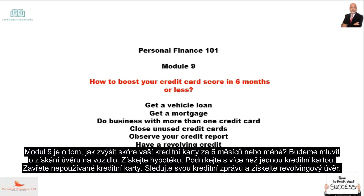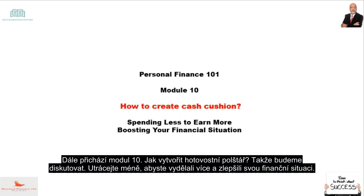Module 9 is about how to boost your credit score in 6 months or less. We'll talk about getting a vehicle loan, getting a mortgage, doing business with more than one credit card, closing unused credit cards, observing your credit report, and having revolving credit.